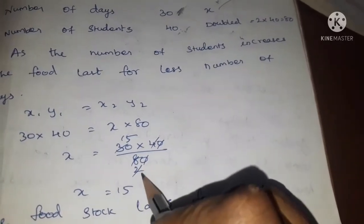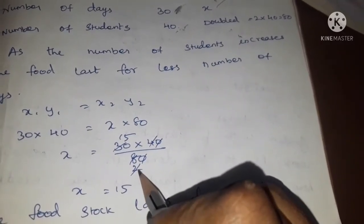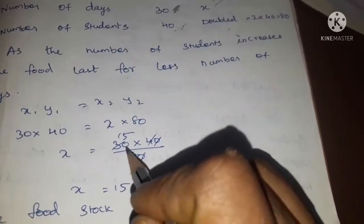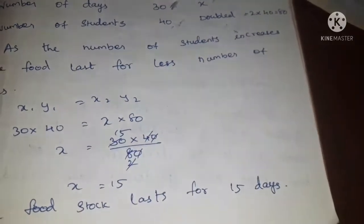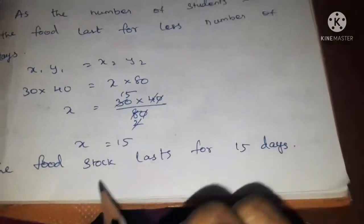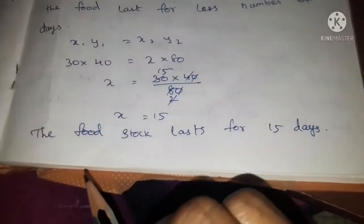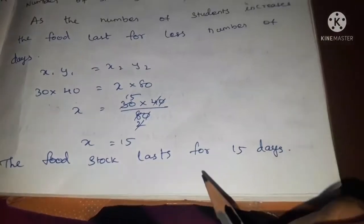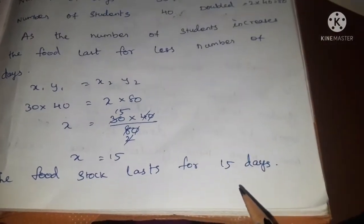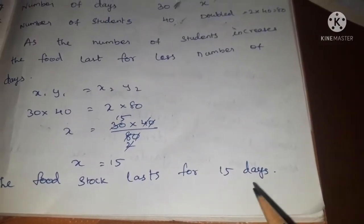Simplifying: 40 ones are 40, 2 forties are 80, 15 twos are 30. x equals 15. So the food stock lasts for 15 days.